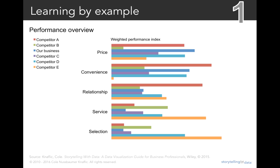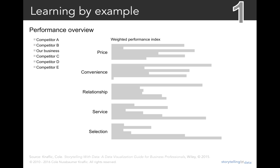Bear with me because we're going to take a step backwards before we move forward. Here I've oriented this as a horizontal bar chart, so the categories previously along the x-axis are now running vertically down the side: price, convenience, relationship, service, and selection. For each of those, I've plotted the weighted performance index in a rightward direction. There's so much color happening here that we have no good cue of where to look, so let's start by stripping color out entirely. We may not care which competitor is which, but we certainly care which bar is our business, so let's highlight that. Then we think about how we can use positioning as a visual cue — our audience will typically start at the top left and do zigzagging Z's across as they take in information.